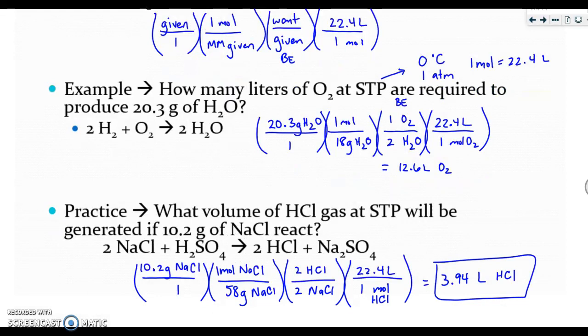Here is the work for the practice problem and the answer. You should have gotten 3.94 liters of HCl. We took our grams of NaCl divided by molar mass to get moles, compared our moles which is 2 to 2, and then finally because we're looking for volume, we're multiplying by 22.4.